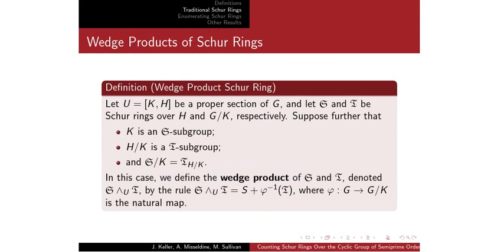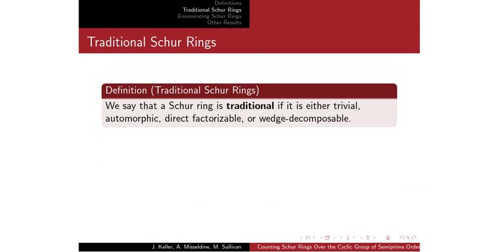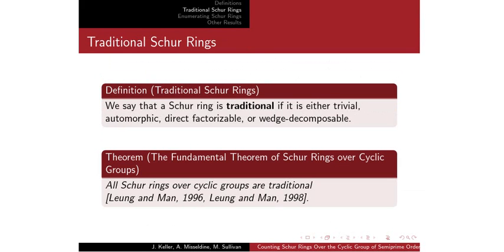That brings us to the end of our types of Schur rings. We classify them as the traditional ones: a Schur ring is traditional if it's either trivial, automorphic, a direct product Schur ring, or a wedge product Schur ring. A theorem from Leung and Man states that all Schur rings over any cyclic groups are traditional. Since we'll be dealing with cyclic groups, we only need to consider these traditional Schur rings when counting them.